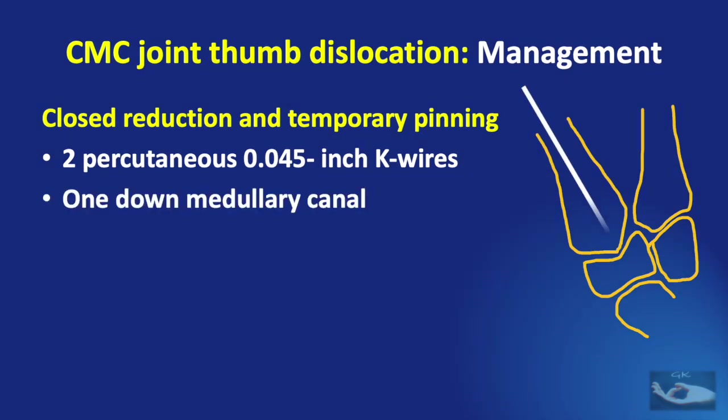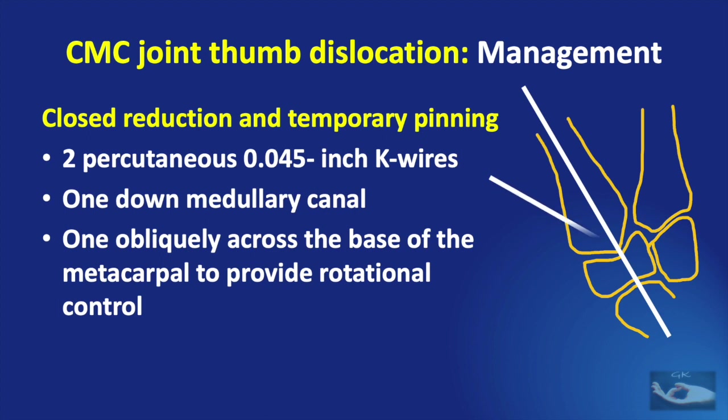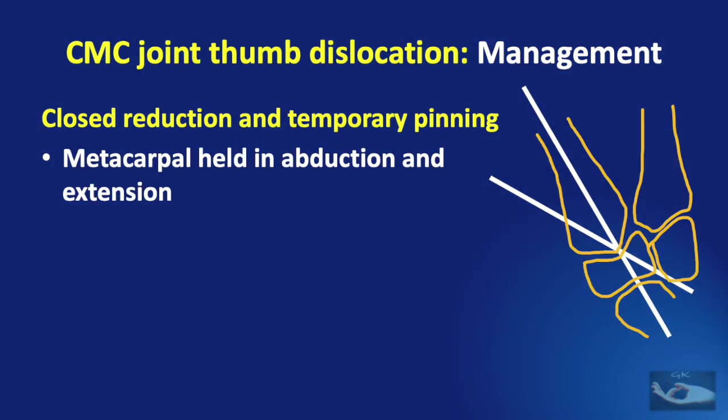One K-wire is passed down the medullary canal and one wire is passed obliquely across the base of the metacarpal to provide rotational control. When the oblique pin is driven across the joint, the metacarpal should be held in abduction and extension as the joint is manually reduced.